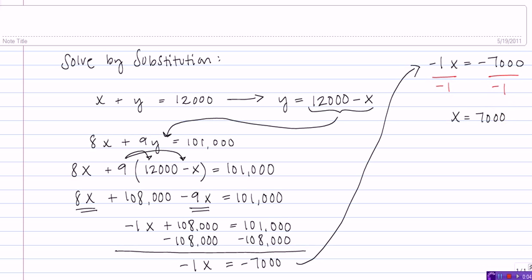Now, I need to use this value for X to find Y. I'm going to go back to this first equation. I can go back to either one, but this first equation is just a bit simpler. So, I'm going to go back to this version of the first equation. Since it's already solved for Y, when I plug in X equals 7,000, I easily get the Y value of 5,000.